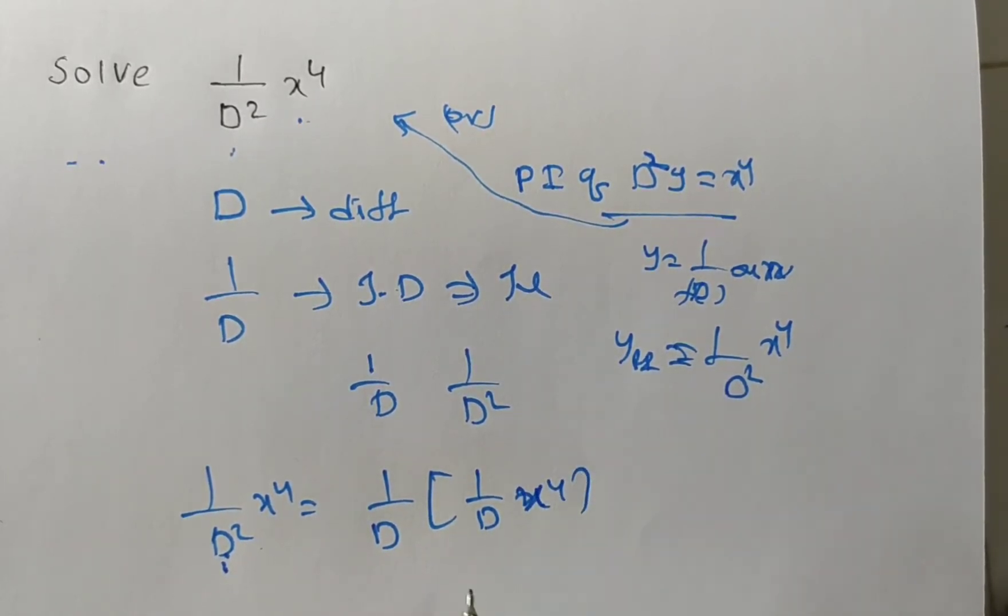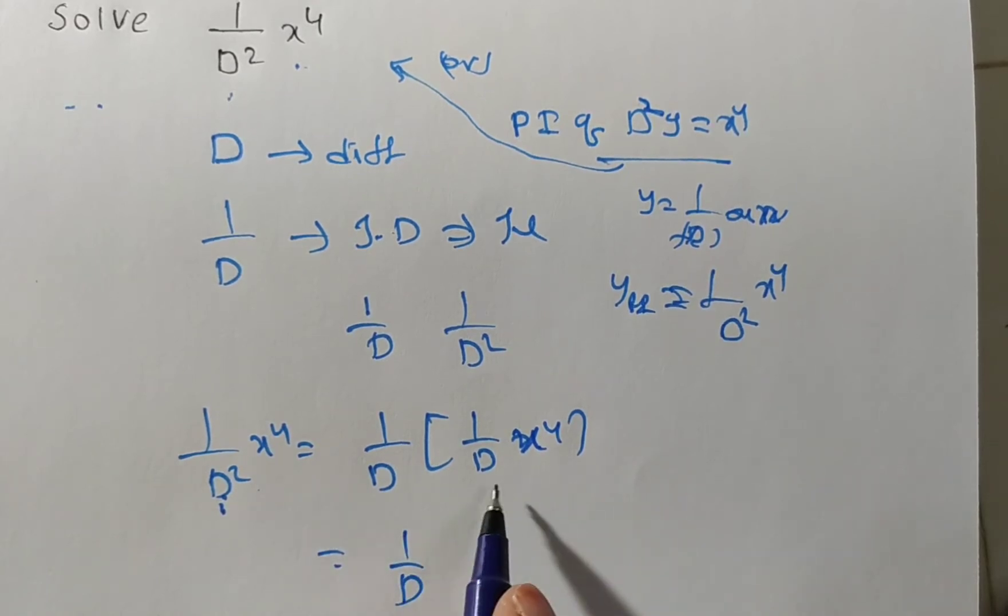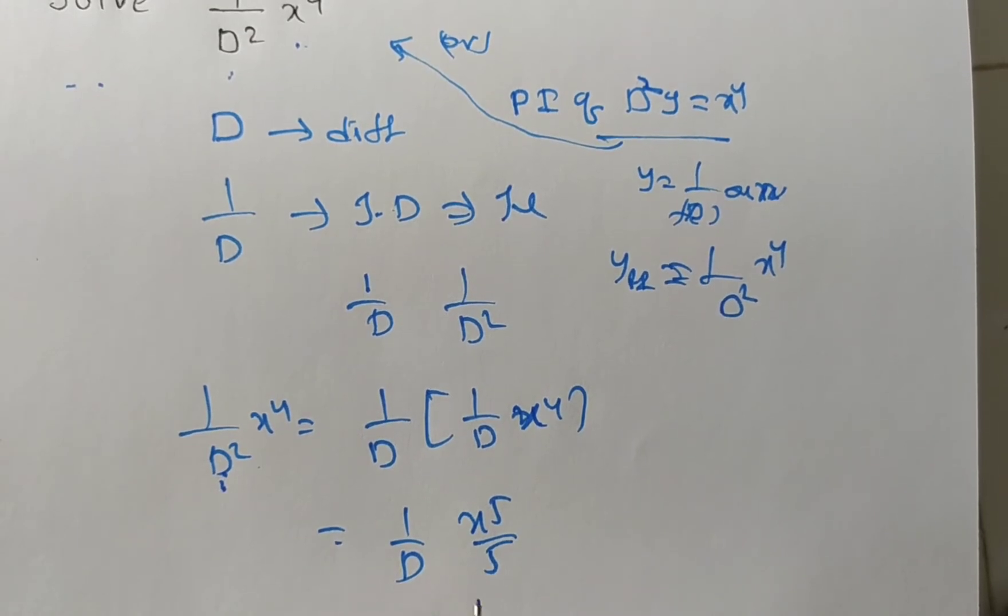First, you can write this in this form: 1 by D times integral of x to the power of 4 is x to the power of 5 by 5. Friends, you see we are not writing the constant. If you write constants there is no change, but here it's better to write without constant.